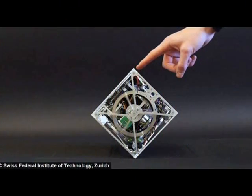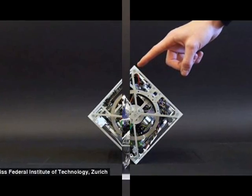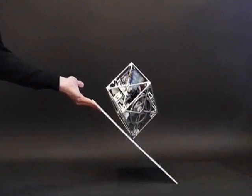The Cubli can jump up and balance on its corner. Reaction wheels mounted on three faces of the cube rotate at high angular velocities and then brake suddenly, causing the Cubli to jump up.